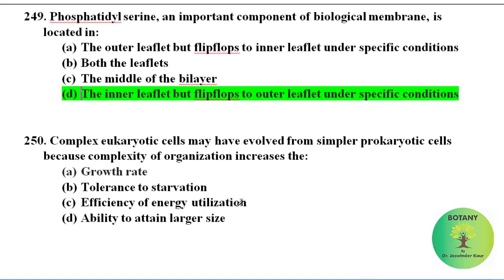Complex eukaryotic cells may have evolved from simpler prokaryotic cells because the complexity will increase — that is all.